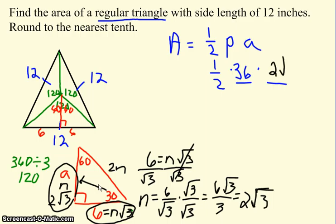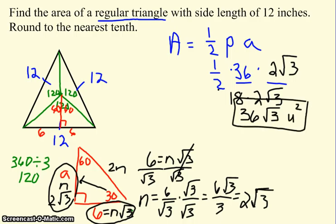So then to finish, I'd multiply these numbers together. 1 half times 36 is 18. Then you'd have 18 times 2 root 3, which give you 36 root 3 units squared for your area.